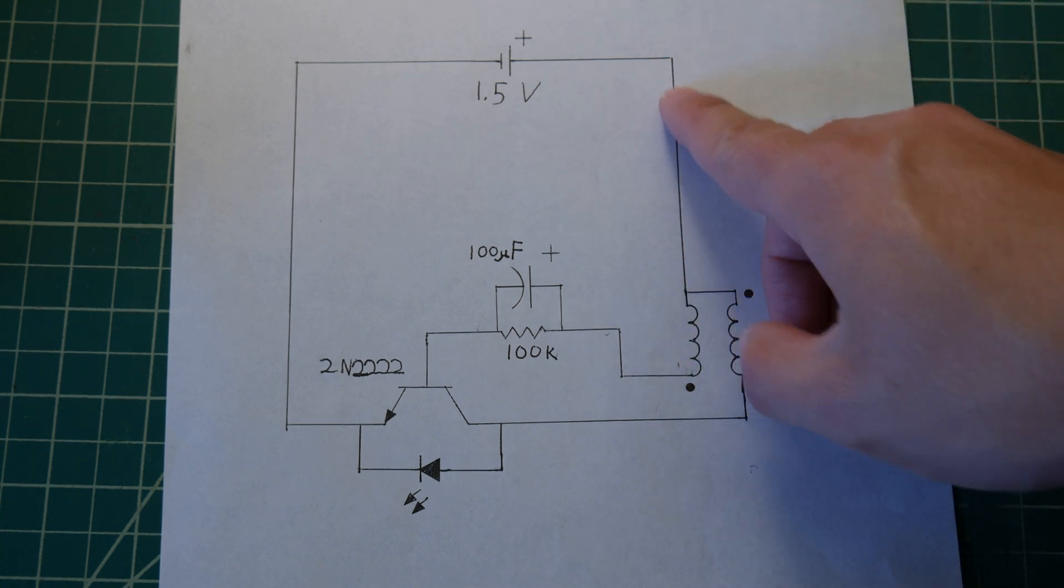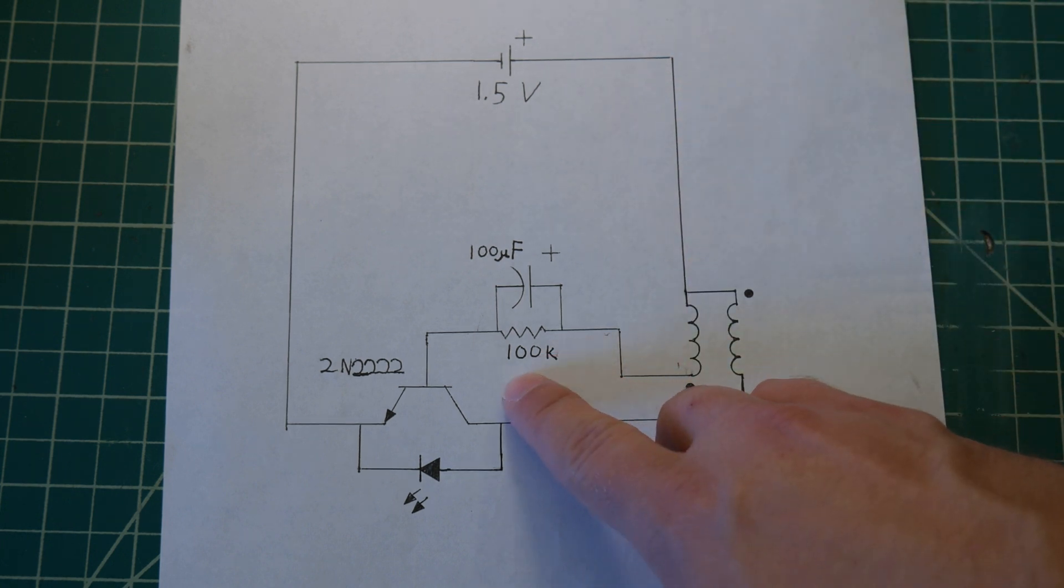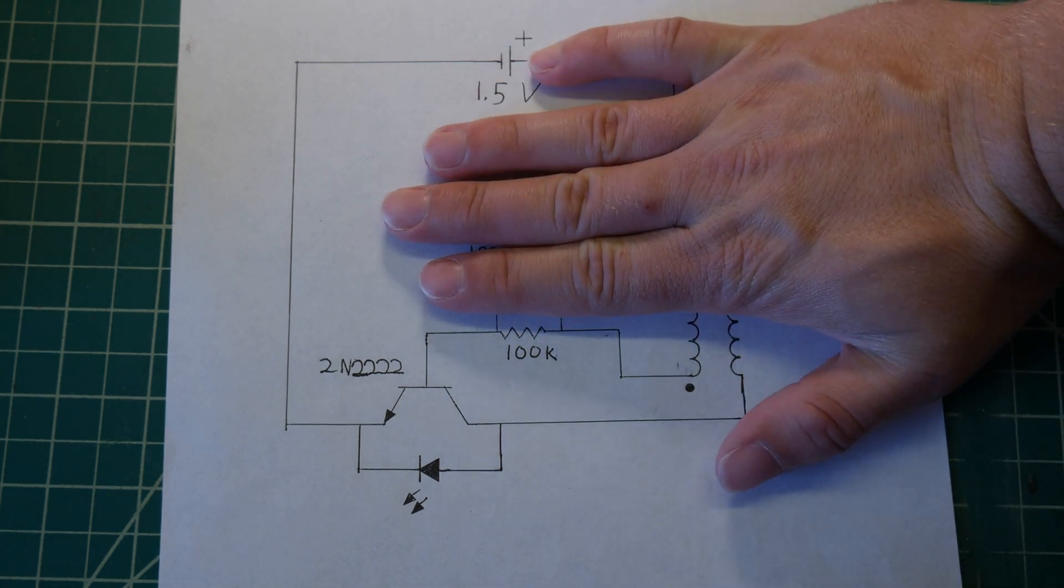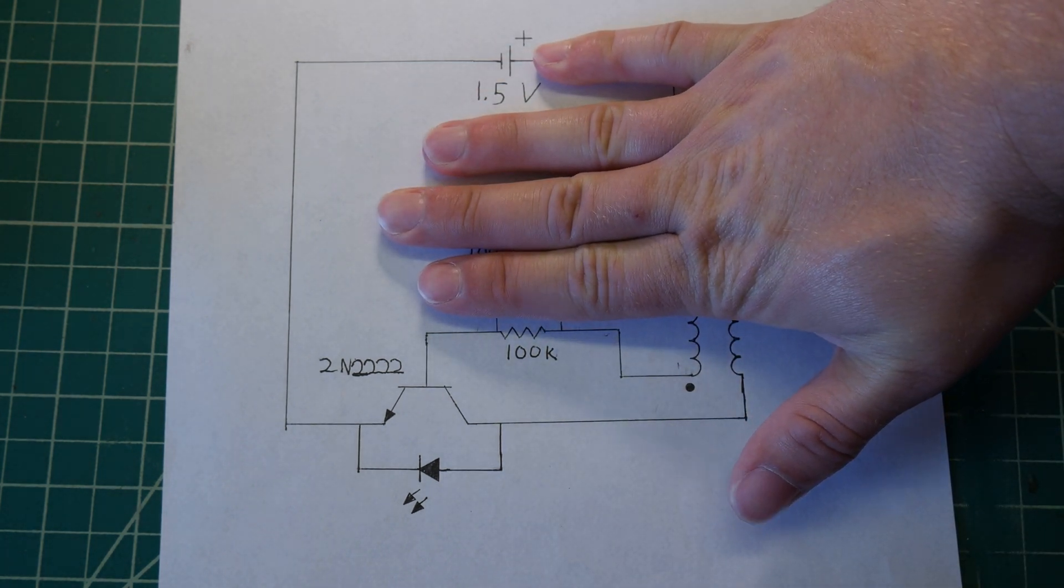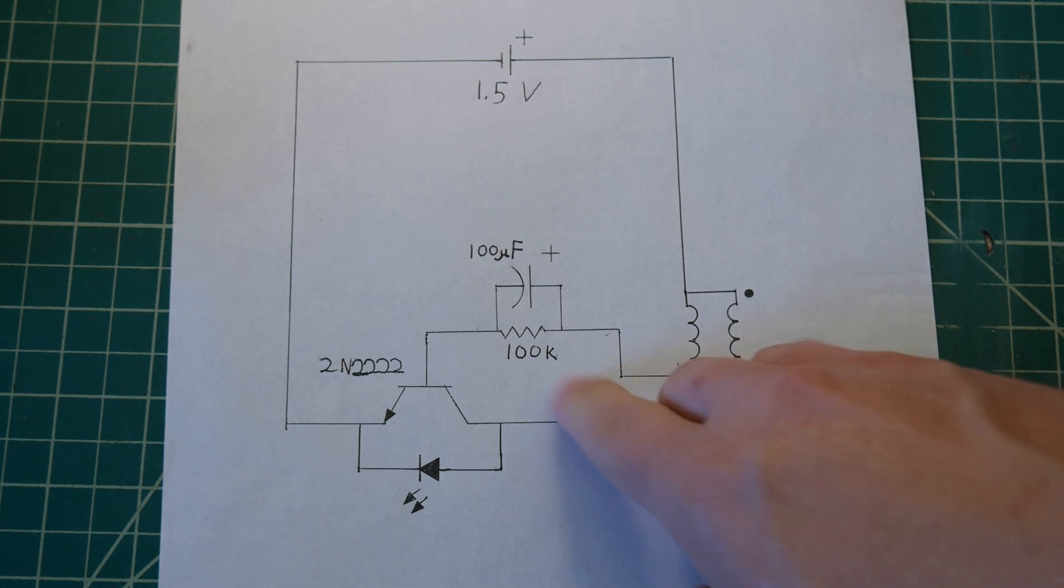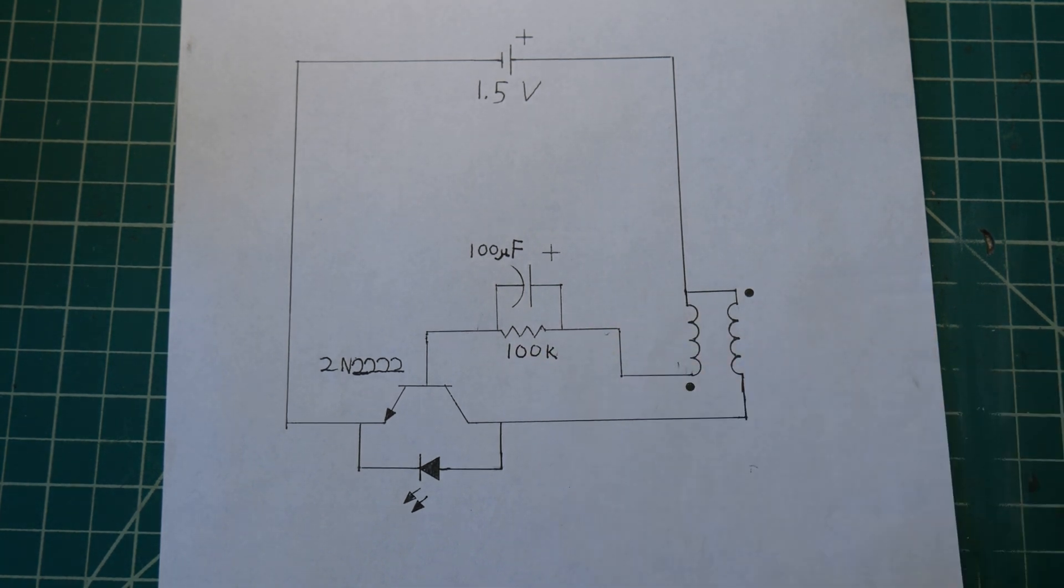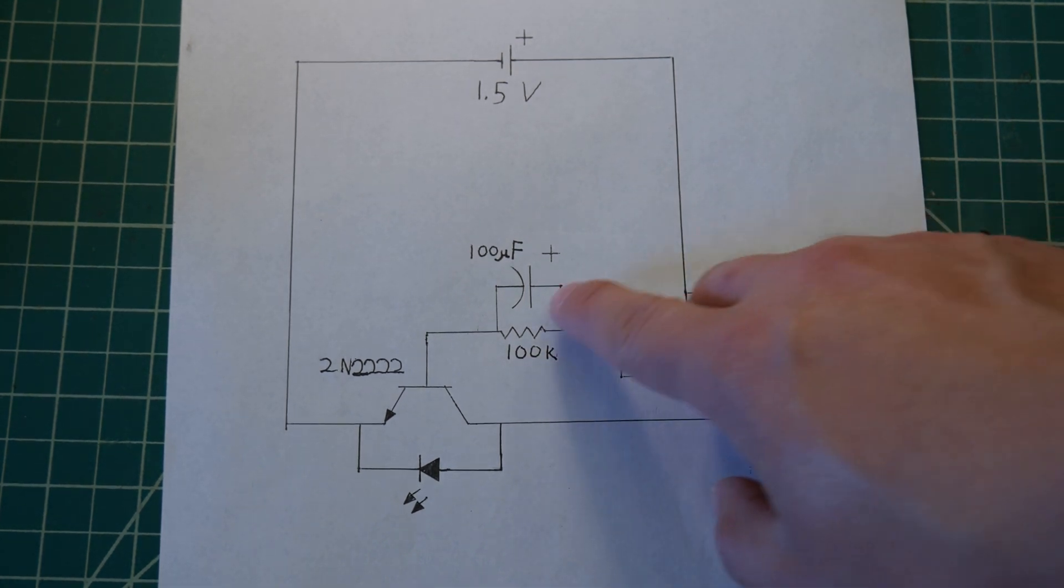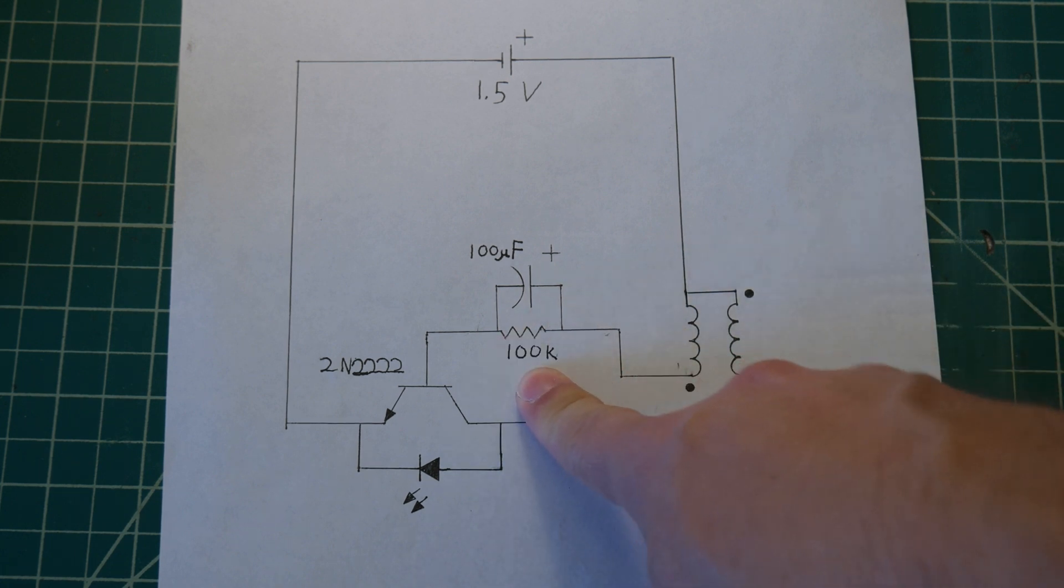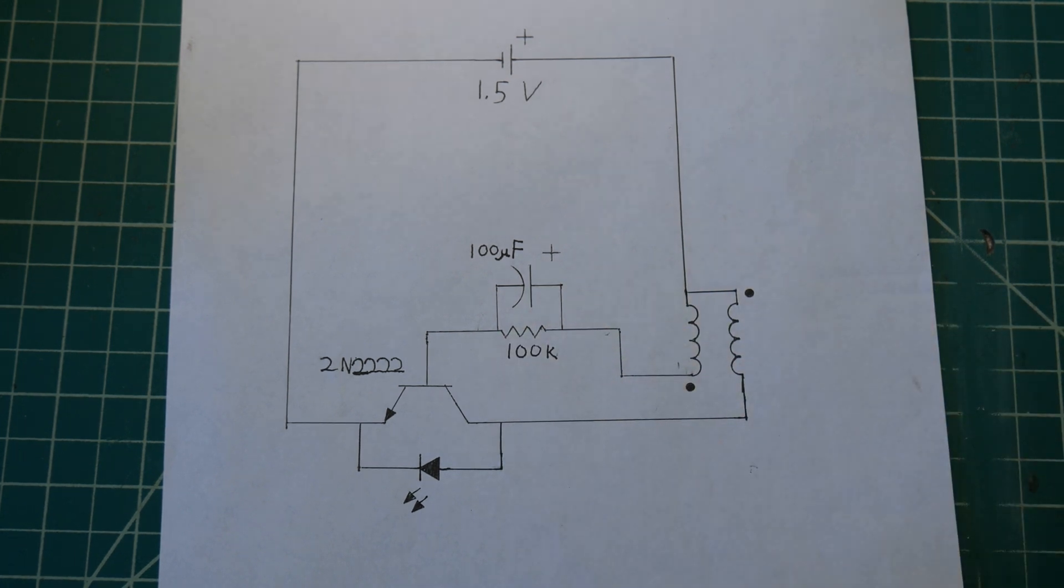The only real difference is usually this capacitor doesn't exist. And instead of that being a 100k resistor, it's usually a 1k resistor or somewhere around there. And by adding that 100 microfarad capacitor and upping this resistor value, you end up creating something that just flashes with one little pulse every once in a while.